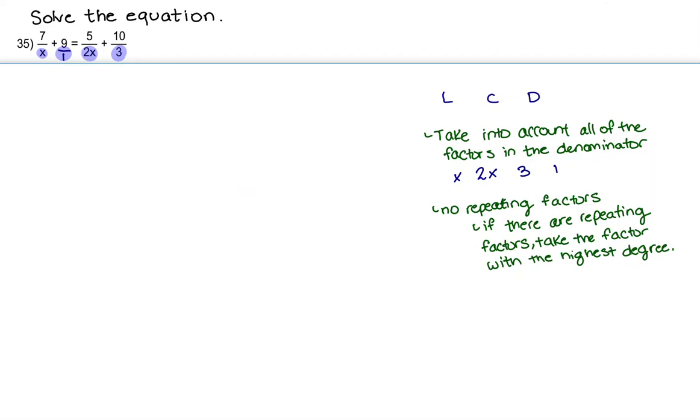So when we break down all of the factors that we have in the denominator, we have an x here, we have a 2 here, we have another x here, we have a 3, and then we have a 1. So we do have repeating factors, we have an x here and we have an x here. Since they're both to the degree of 1, we're just going to take into account 1 and we're going to cancel out the other one.